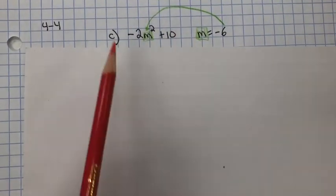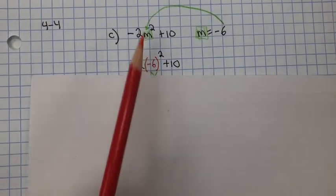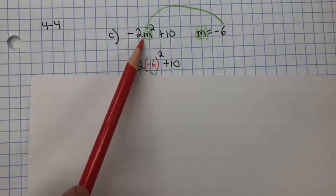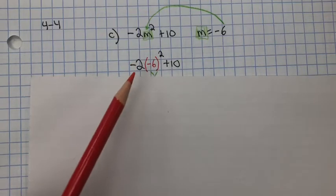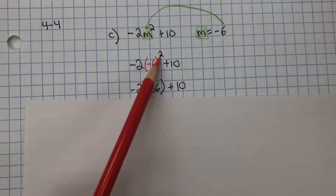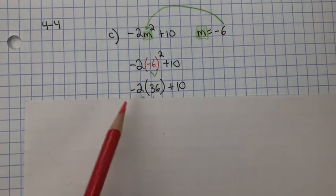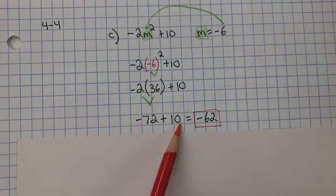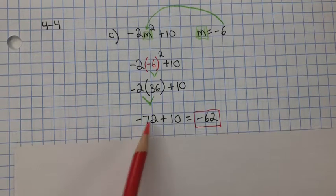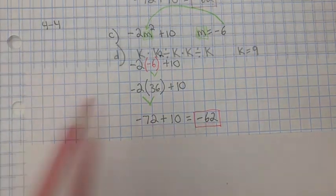M equals negative 6 in problem C. So I put it in parentheses — the M is negative 6. And negative 6 squared is 36, because negative 6 squared means negative 6 multiplied by negative 6. Now, negative 2 multiplied by 36 is negative 72 plus 10. We keep the sign that you have more of, which is more negatives. Signs are opposite, so now we subtract the two values. 72 minus 10 is 62, so it's negative 62.